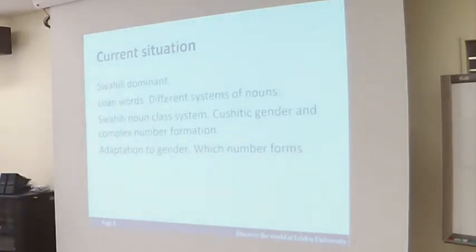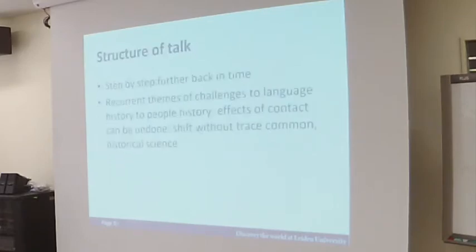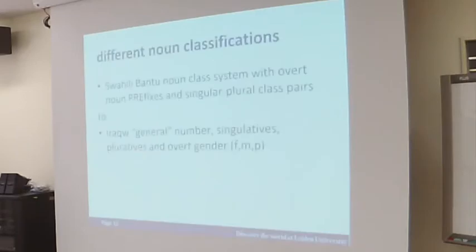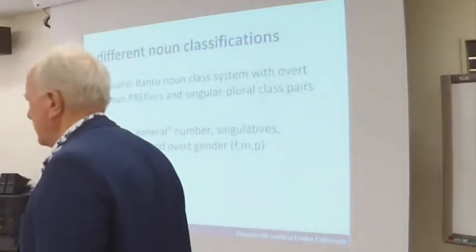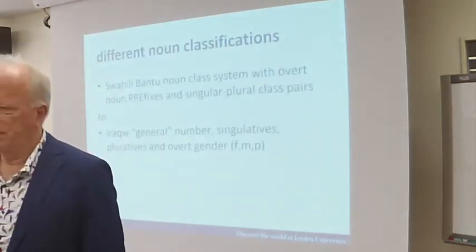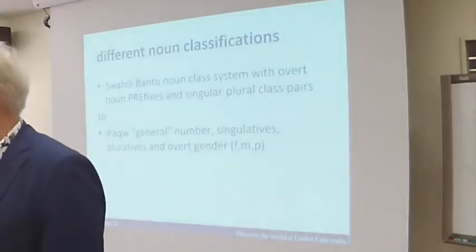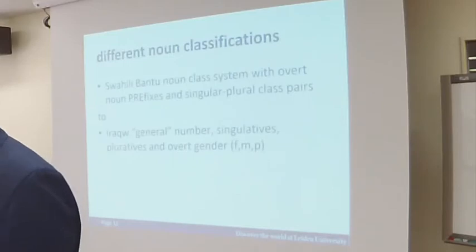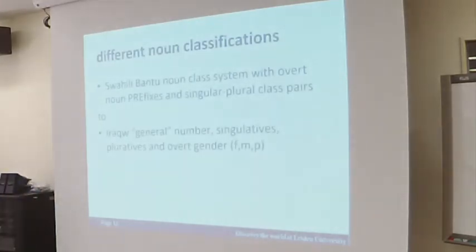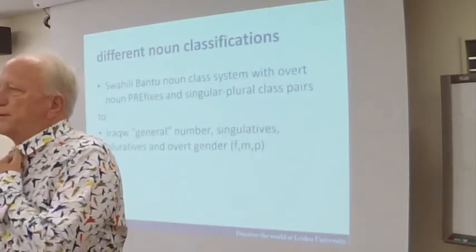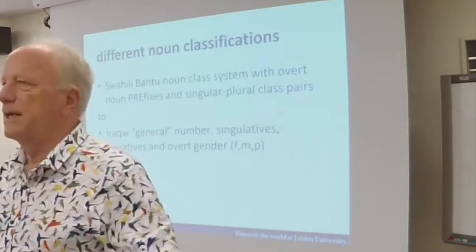When Cushitic languages borrow from Swahili, they have to put those nouns into their gender system — so there are two challenges: adaptation to gender, and adaptation to number. Cushitic languages are a bit special in that they have singulative forms, plurative forms, and a general number that can be used for any number situation, from which plural is derived. When a Cushitic language like Iraqw borrows from Swahili, it has to decide: do we borrow it as a singular noun or as a plural noun? Whereas for most languages in the world, you would just borrow it as a singular and derive the plural inflectionally.